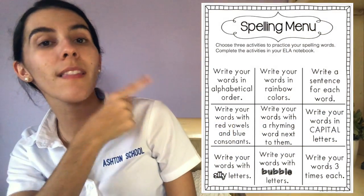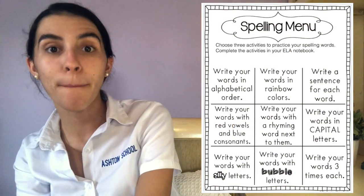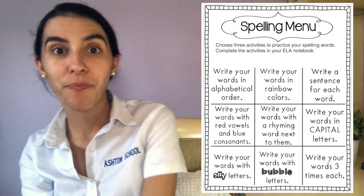When you are done with your book, you can move on to spelling. Practice your spelling words for cycle nine and you can choose three different ways that you are going to practice your spelling with the spelling menu. That's it for ELA, my friends. Bye.